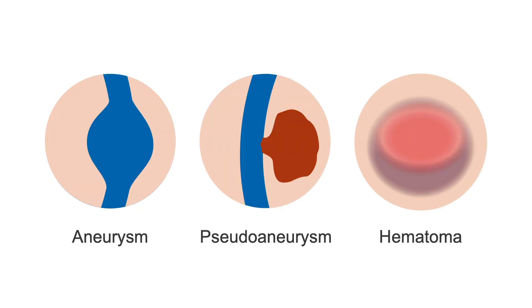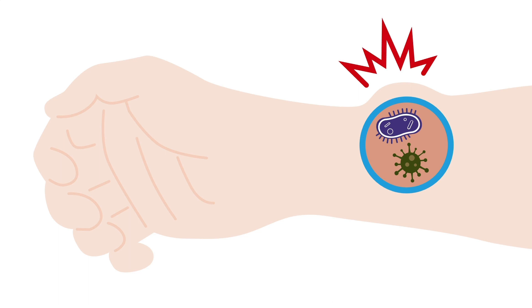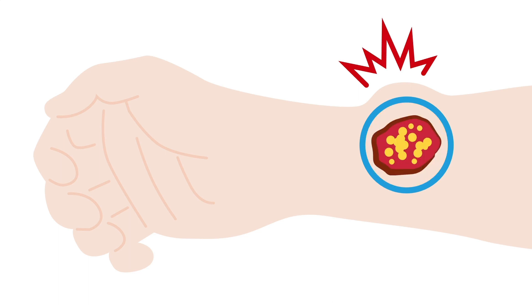Aneurysms, pseudoaneurysms, and hematomas are relatively common complications of arteriovenous fistulas and grafts. Their symptoms include an externally visible outflow vein dilation and an arm mass, which will be pulsatile in the case of an aneurysm or pseudoaneurysm. They can also cause infection and pain, and the skin over the area may be thin and shiny or ulcerated.